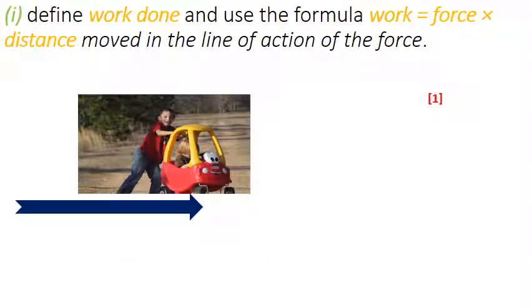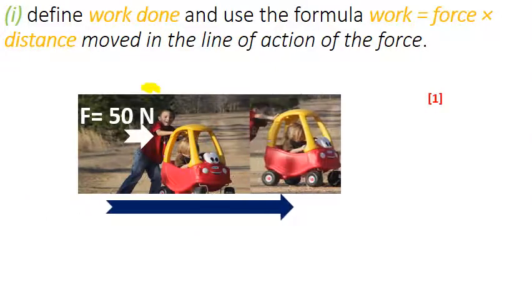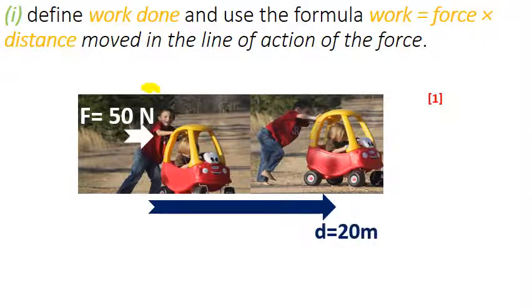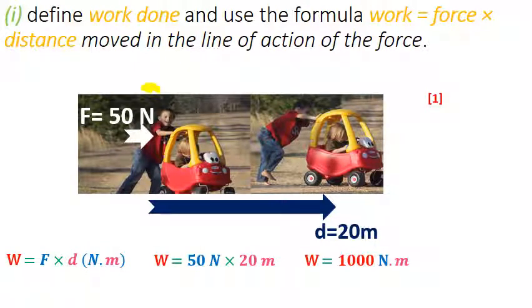Now let's do some calculations to make work done more clear. Not any activity will be considered as work done unless the distance covered is in the same direction. Here we have this kid applying force of 50 Newtons towards the right, and the cart moves 20 meters. We use the formula F times D, apply the values, and get 1000 Joules.